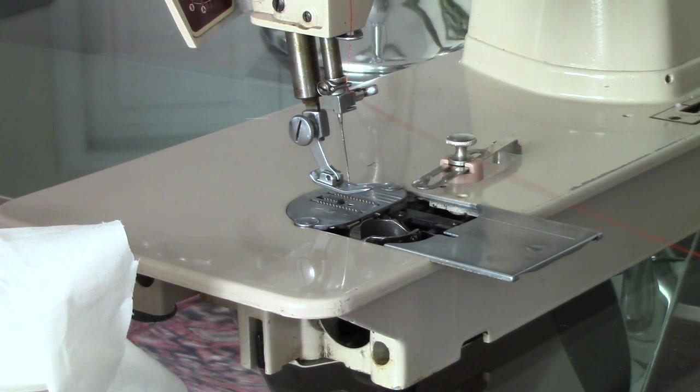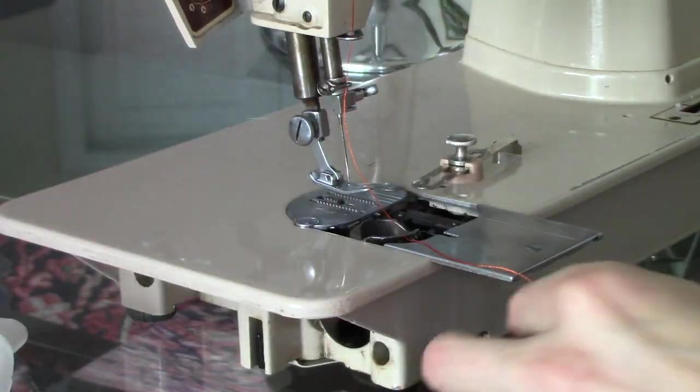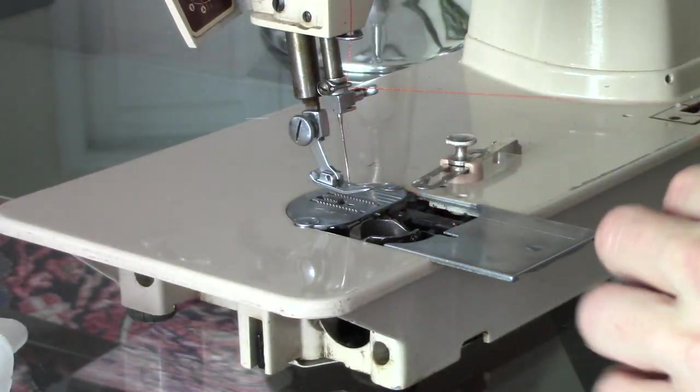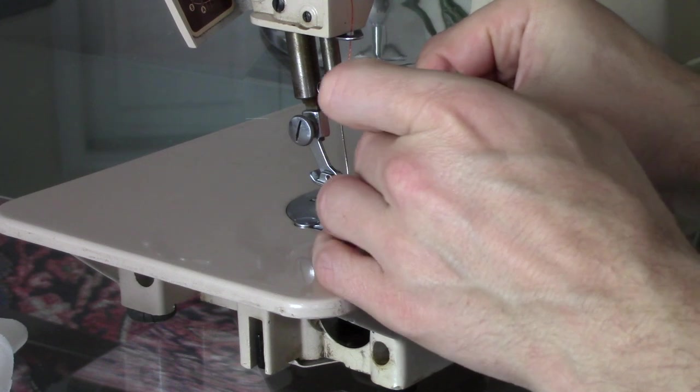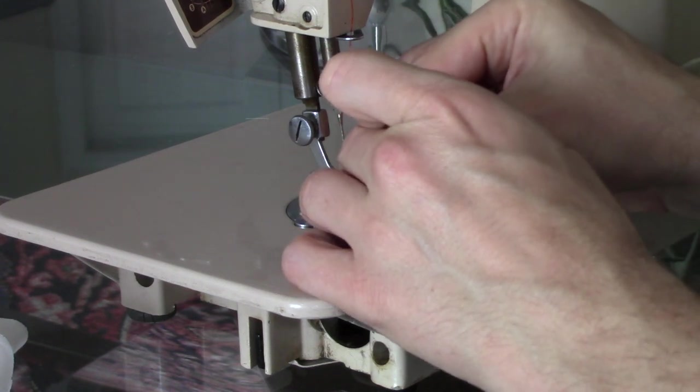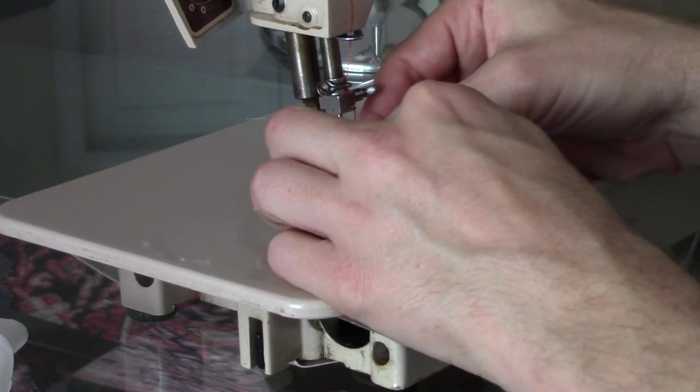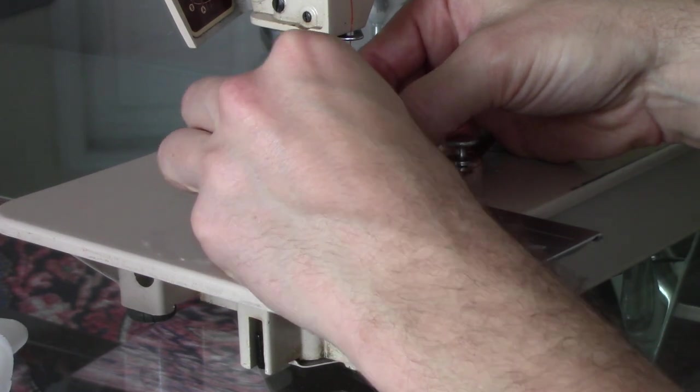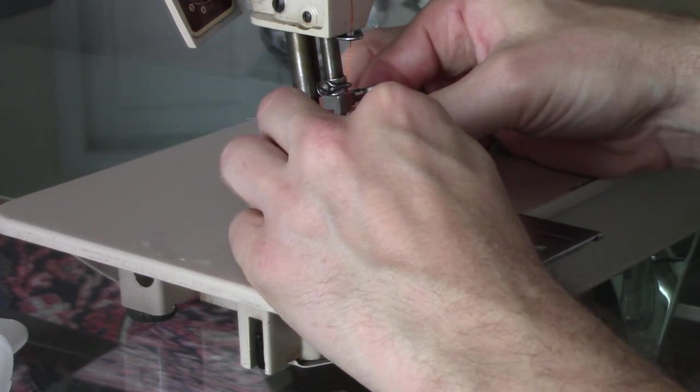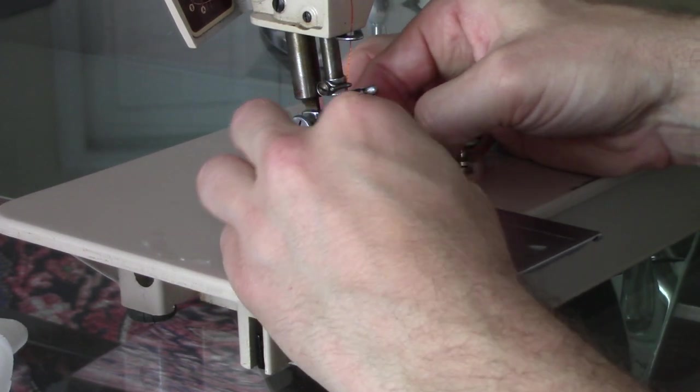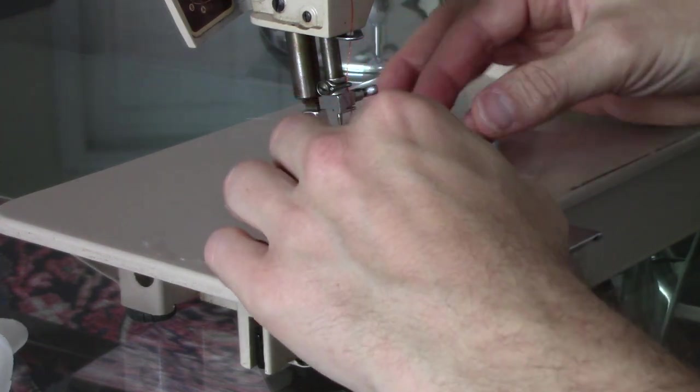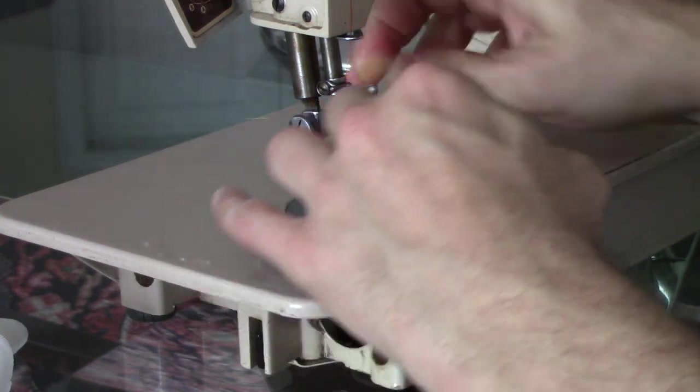And normally if you're using this type of spool of thread, you should make sure you have it in a horizontal thread holder or a vertical spool thread stand. Because that solves your bother of the thread wrapping around the spool holder. Okay. There we go.